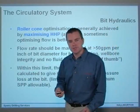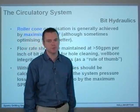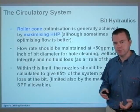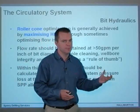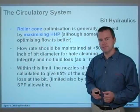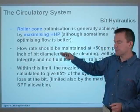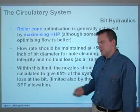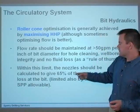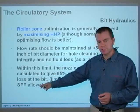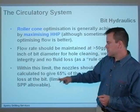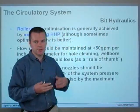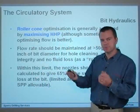Roller cone optimization is generally achieved by maximizing hydraulic horsepower, although sometimes optimizing the flow is better. As a rule of thumb, flow rate needs to be maintained at greater than 50 gallons per minute per inch of bit diameter for good hole cleaning and wellbore integrity. Within that limit, the nozzles should be calculated to give 65% of the system pressure loss at the bit, also limited by maximum standpipe pressure. If you can choose the correct nozzles to give 65% of your total standpipe pressure at the bit, you'll have optimized your hydraulic horsepower and cleaning of the bit.